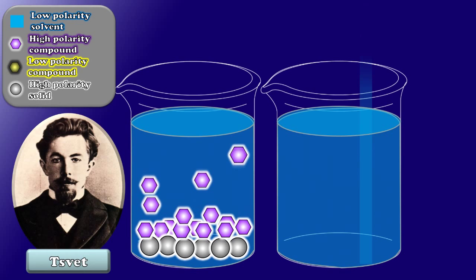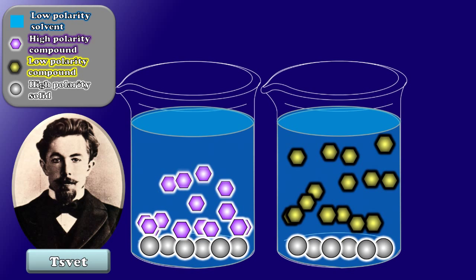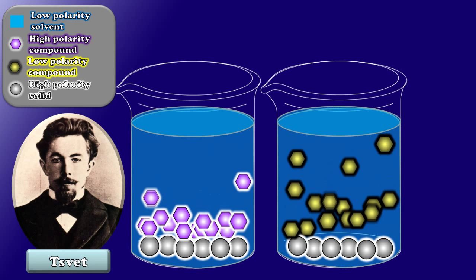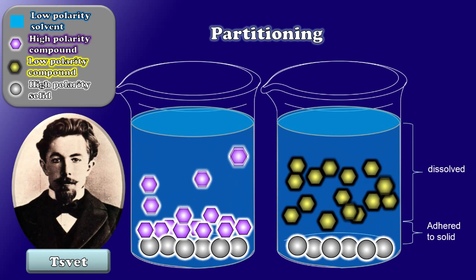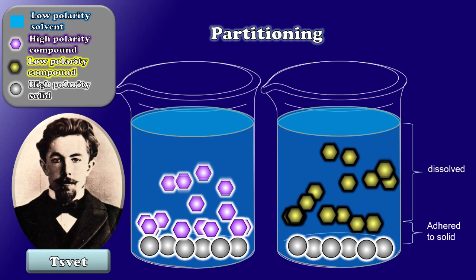But if we introduce a compound of lower polarity, it has less of an affinity for that polar compound, and therefore will spend more of its time dissolved in solution. But notice that these are equilibrium processes. We call this equilibrium partitioning. And it has to do with how strongly a compound adheres to a solid phase versus how well it dissolves in the liquid phase.